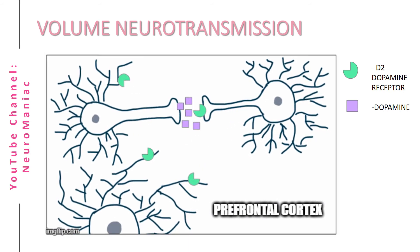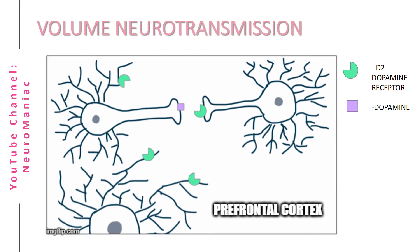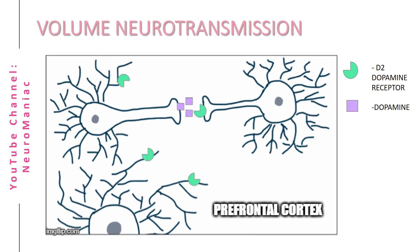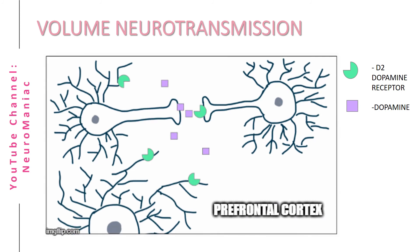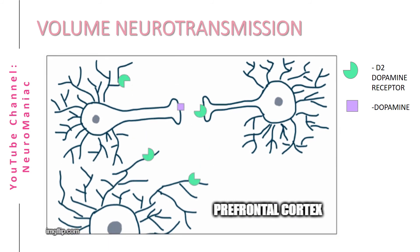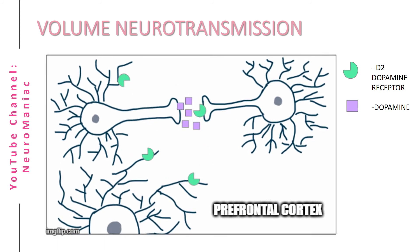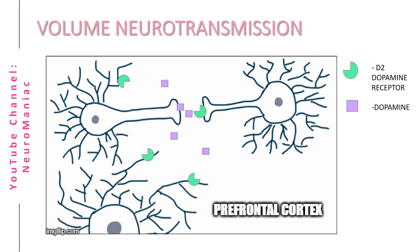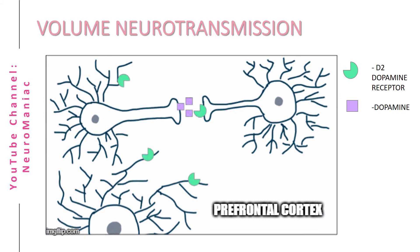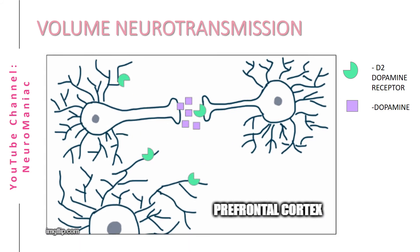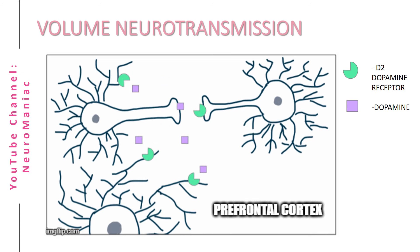In this example, dopamine is released in the prefrontal cortex, a region which has minimal dopamine reuptake transporters, therefore limiting the termination of dopamine release. Therefore, dopamine is free to diffuse to neighboring regions and act on other dendritic receptors or other neuron receptors.